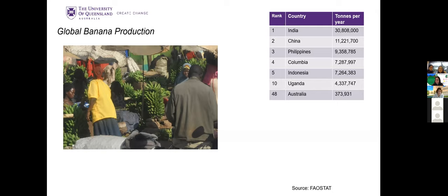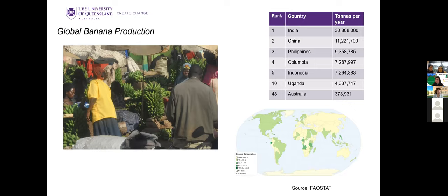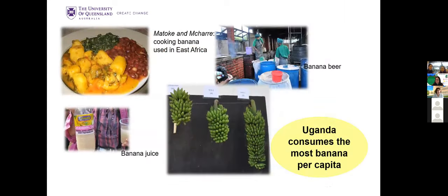Uganda ranks 10th in production, but when we look at consumption per capita, countries like Tanzania, Uganda, and Kenya rate very high. In Uganda in particular, banana is the main carbohydrate source. It's a cooking banana, and getting accurate statistics is a problem because agricultural data often splits banana, plantain, and cooking banana into different groups — but they're all the one thing.